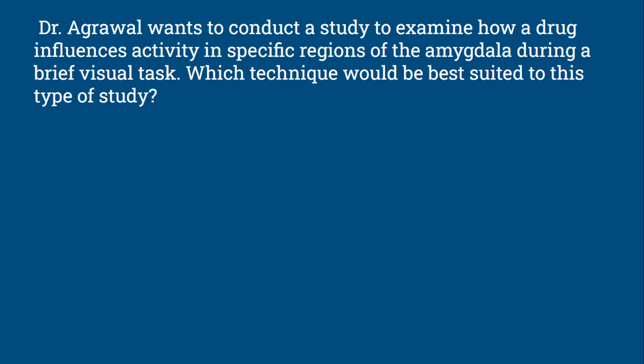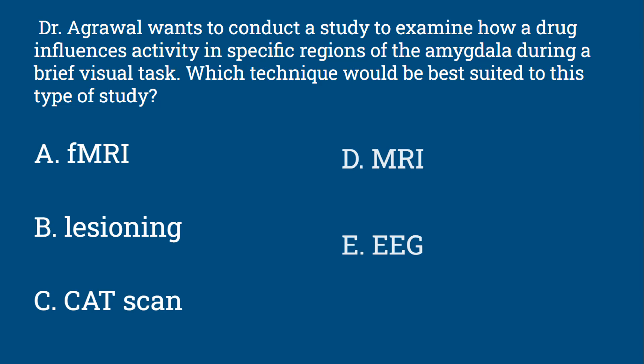Question 3: Dr. Agarwal wants to conduct a study to examine how a drug influences activity in specific regions of the amygdala during a brief visual task. Which technique would be best suited to this type of study? Would it be fMRI, lesioning, CAT scan, MRI, or EEG?